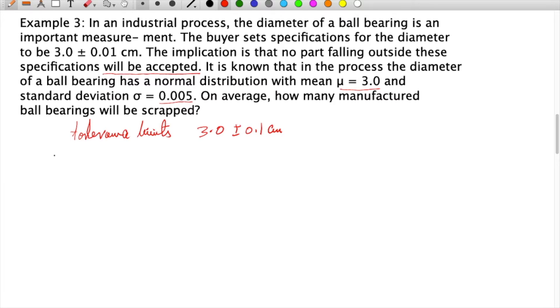The probability of getting outside these limits—this is the lower limit, this is the upper limit—will be the proportion that possibly gives items out of the limit.